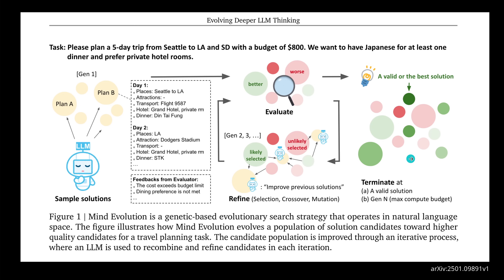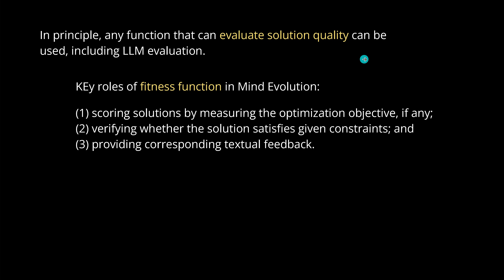I thought maybe the innovation is in the evaluation function. In principle, any function that can evaluate solution quality can be used, including a pure LLM evaluation by the LLM itself of its own generated solution. They call this in the Mind Evolution scheme the fitness function — scoring solutions by measuring the optimization objective, verifying whether the solution satisfies the given constraints, and providing corresponding textual feedback. So we have a simple feedback loop.